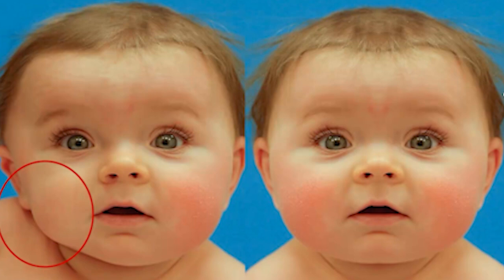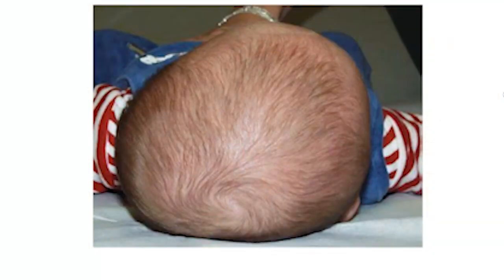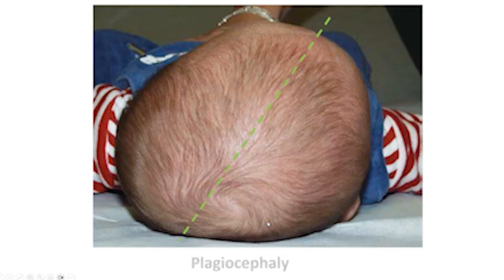Also observe whether the shoulder may be elevated on the affected side. You may find head asymmetry. This asymmetry is usually due to the infant lying on his back and turning his head to one side, so pressure occurs on one side more than the other. This deformation of the head is called plagiocephaly.